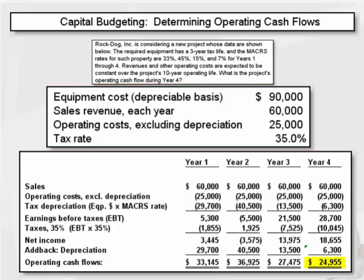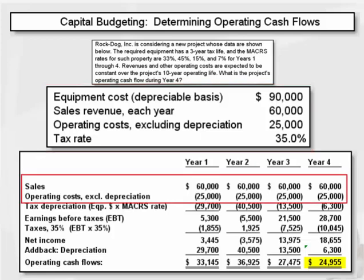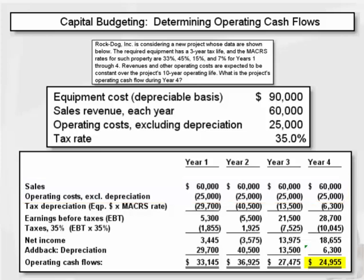We jot down sales and operating costs for all years. In this problem we know that that's constant, with sales at $60,000 and operating costs excluding depreciation at $25,000. Next we need to calculate tax depreciation, and we do that by taking the equipment cost, which represents the depreciable basis, and multiplying it by the appropriate MACRS percentage rate in each year.